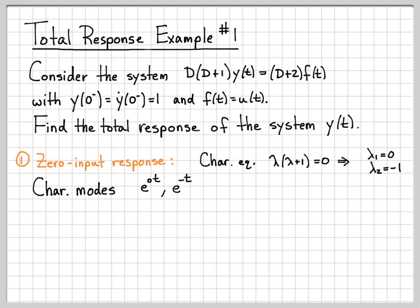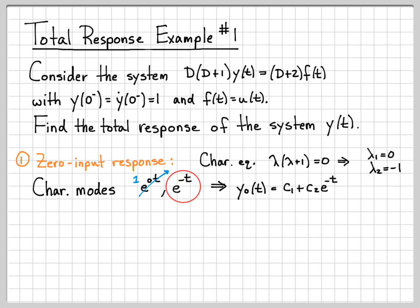From these roots, I can form the characteristic modes. Since these are unique eigenvalues, the characteristic modes are pretty easy — it's just e to the lambda_1·t and e to the lambda_2·t. Since lambda 1 is equal to 0, that's e to the 0, which is just 1. So the zero input response y_0(t) is c1 times the first mode plus c2 times the second mode.